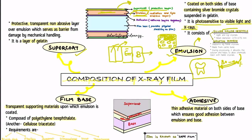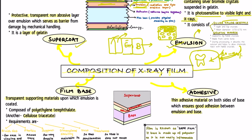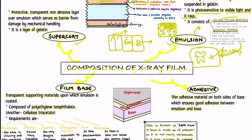The next layer is the adhesive layer — seen in purple in the diagram. Adhesive, as the name says, adheres the layers together. It is a thin adhesive material on both sides of the base. The base is the centermost layer of the film, and the adhesive on both sides of it helps in good adhesion between the emulsion and the base.